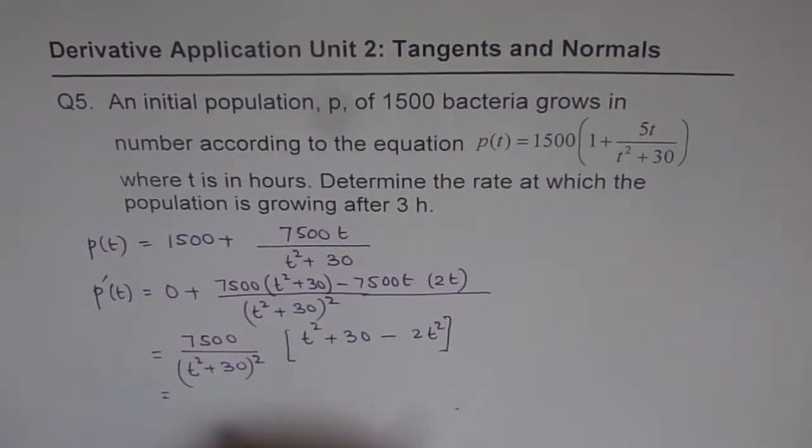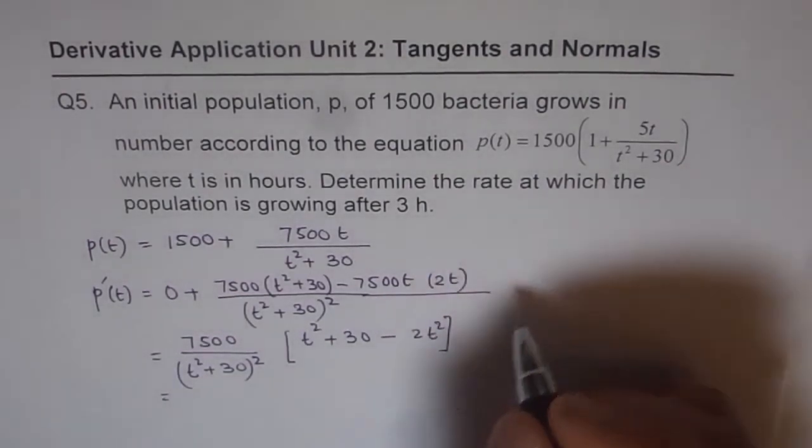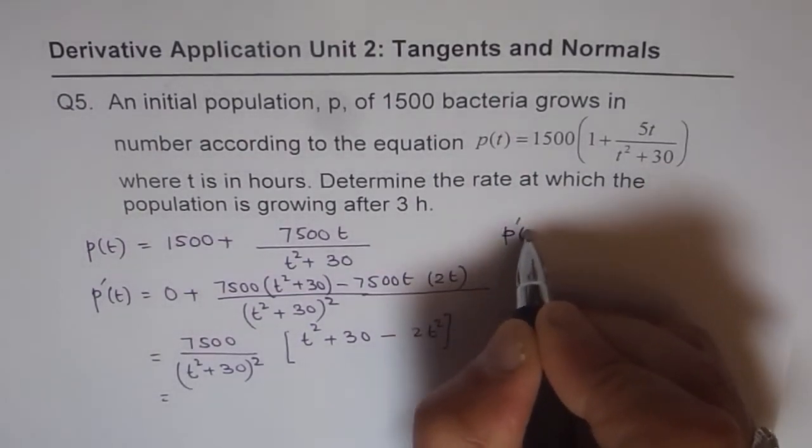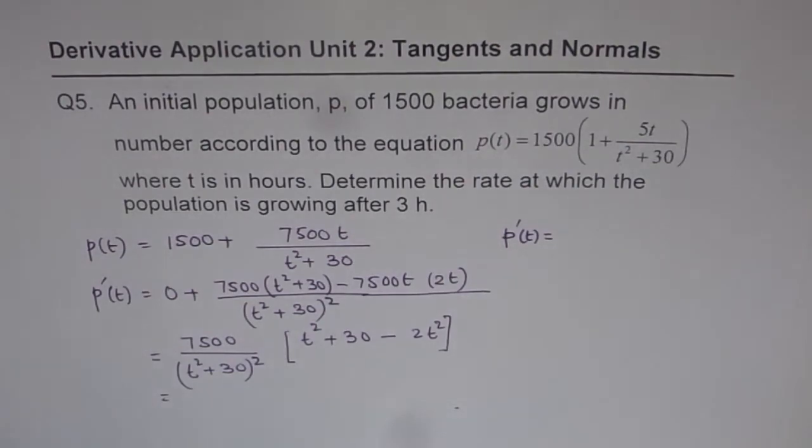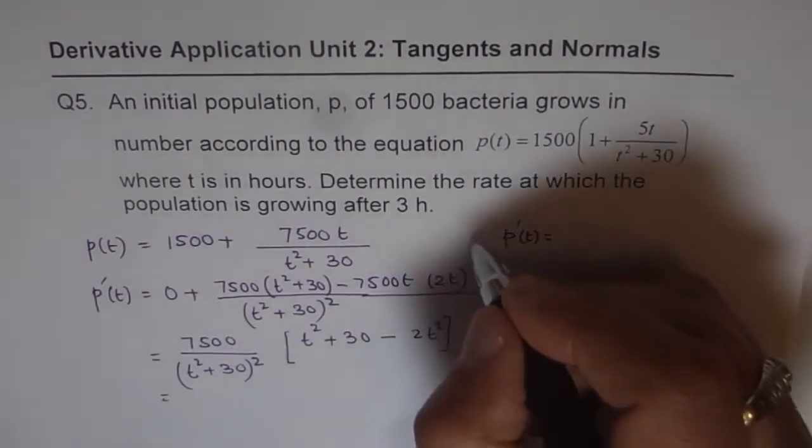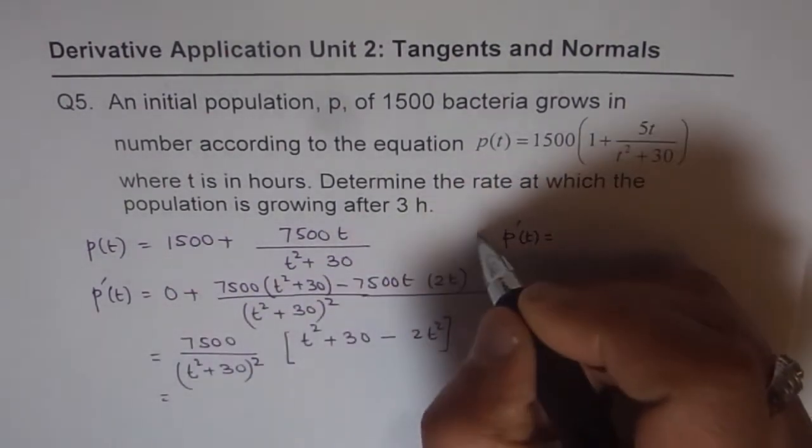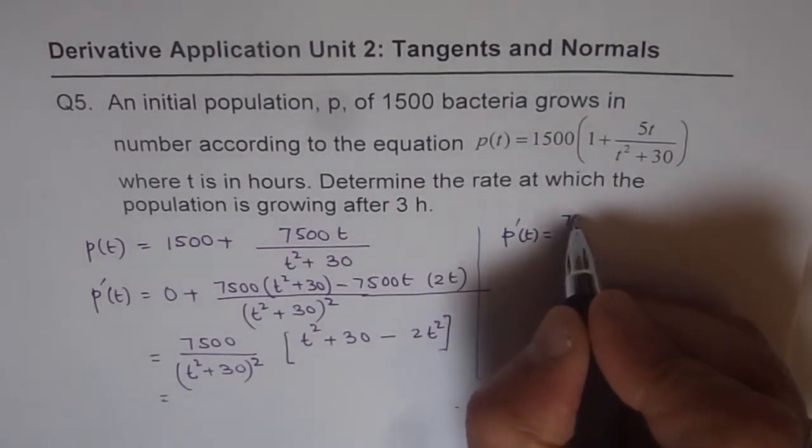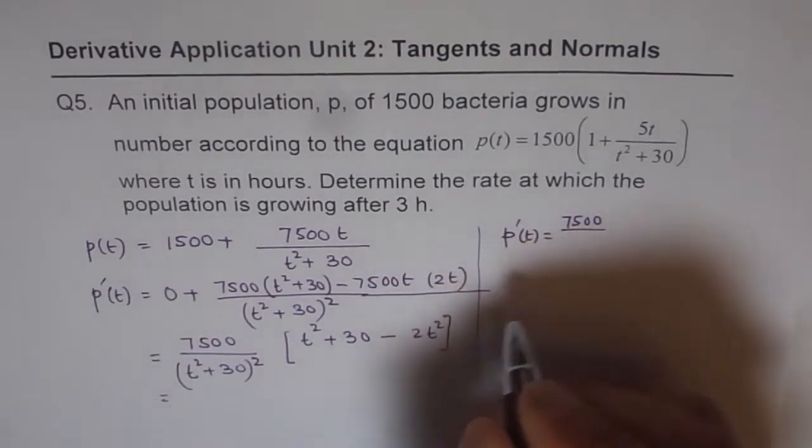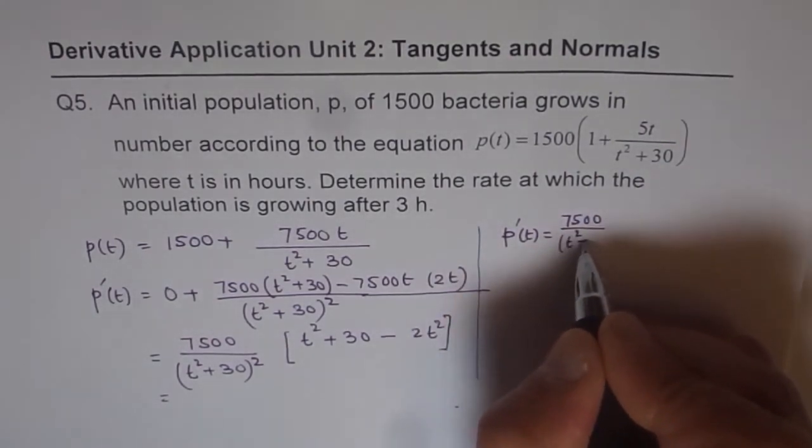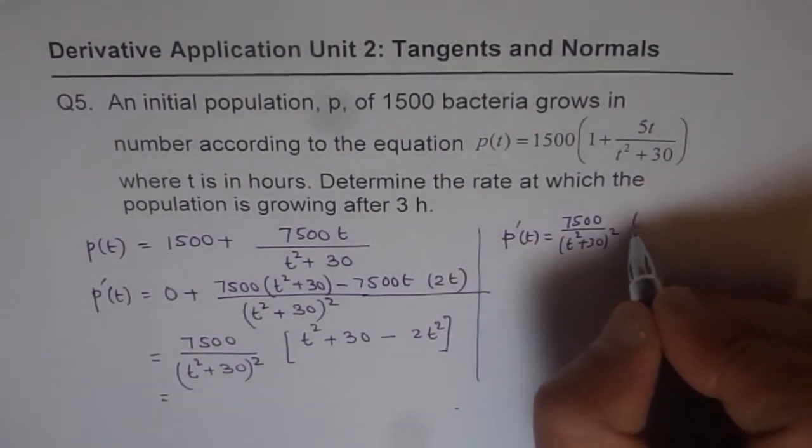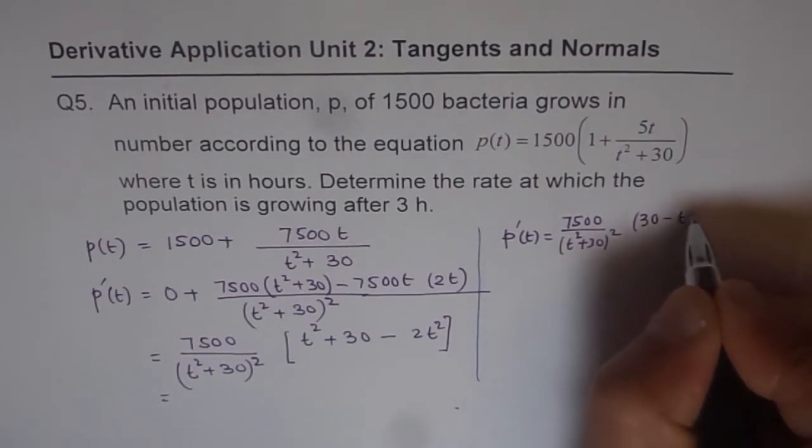And this could be written as, let's write down here on this side. So which is P dash t equals to. So what I've done is I'm taking it on the other side. Okay, so we're just running out of space here. So we'll write this as 7500 over t squared plus 30 whole square. Let's combine this. We get 30 minus t squared.